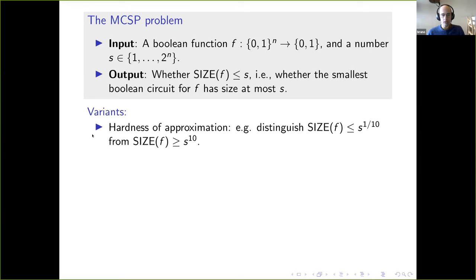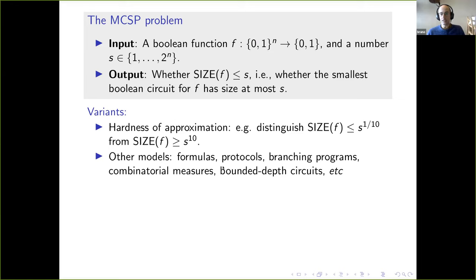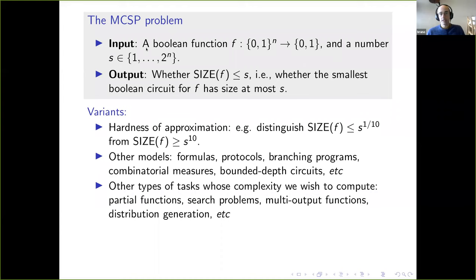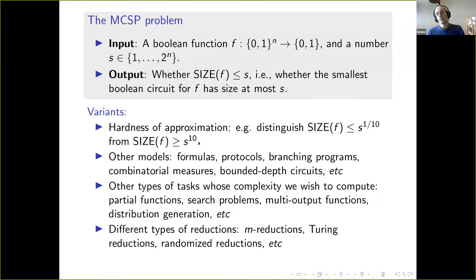You can also consider analogous problems for other models: size of the smallest formula, number of leaves in the smallest protocol, size of the smallest branching program, combinatorial measures like partition number, bounded-depth circuits like AC0 or TC0, and so on. You could measure the complexity of computing partial functions, solving search problems, or multi-output functions where you want the same circuit to compute all bits of f.